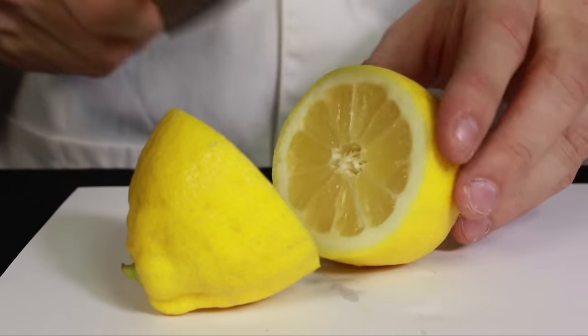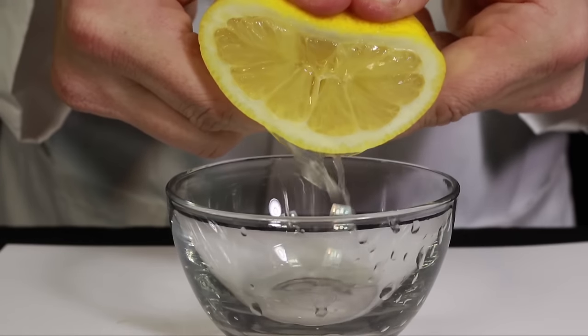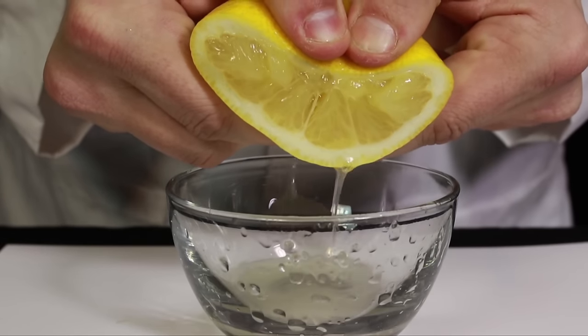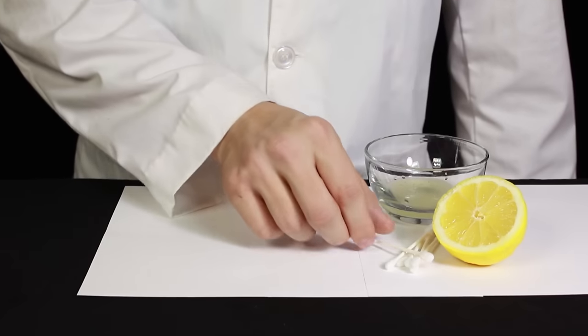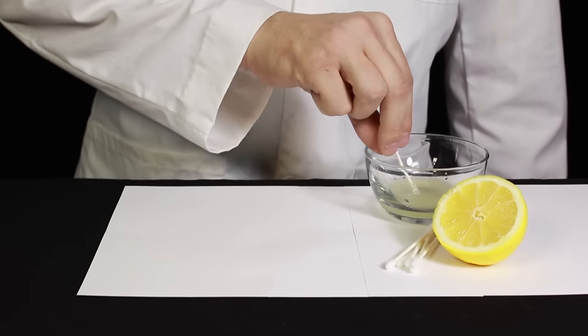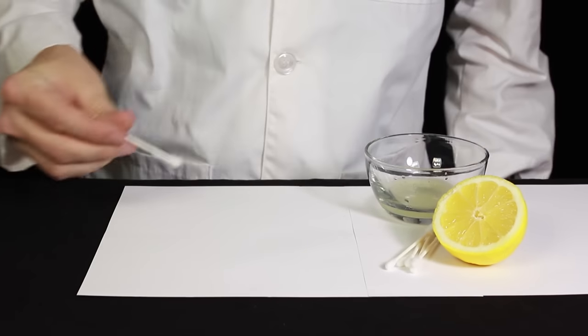Start with one large lemon, cut it in half, and then squeeze the juice into a small container. Now take either a q-tip or a small paintbrush and dab some lemon juice onto the end.